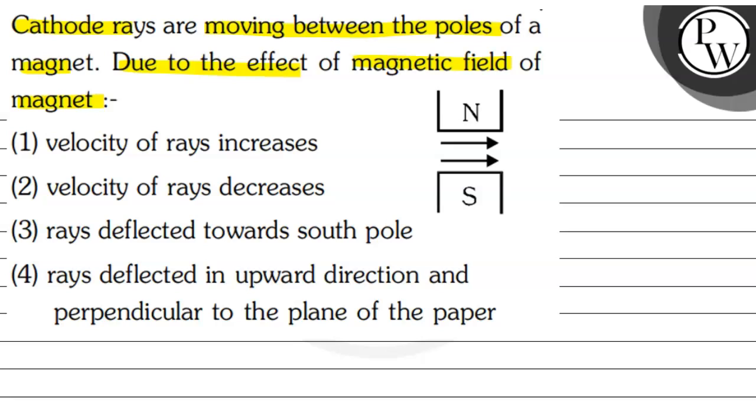To identify this, we are looking at the magnetic field of a magnet. Cathode rays means what? Cathode rays means that we are talking about electrons. So who is moving? Electron is moving.